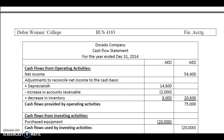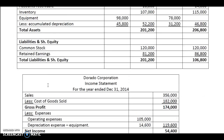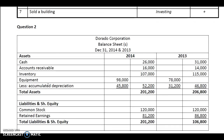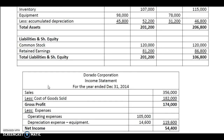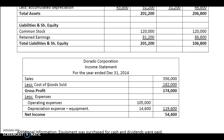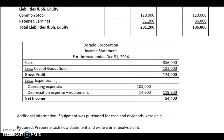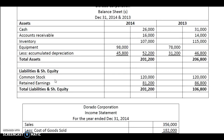Now you look for the increase and decrease in current assets. But before that, look for any gain or loss on sale of non-current assets, that is fixed assets. There is no gain or loss on sale of asset which has been recorded in the income statement, so then we can move on to the increase and decrease in the current assets or current liabilities.